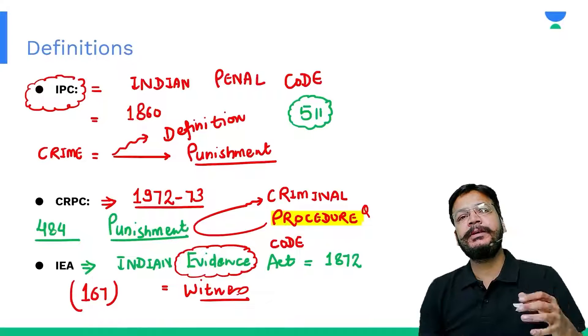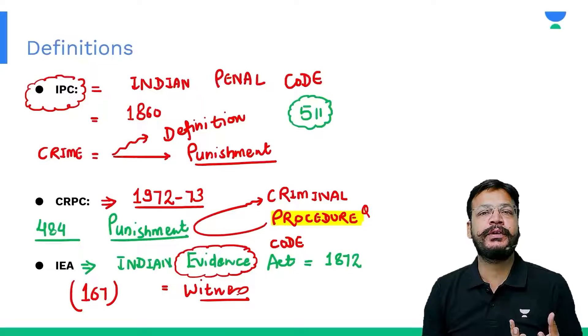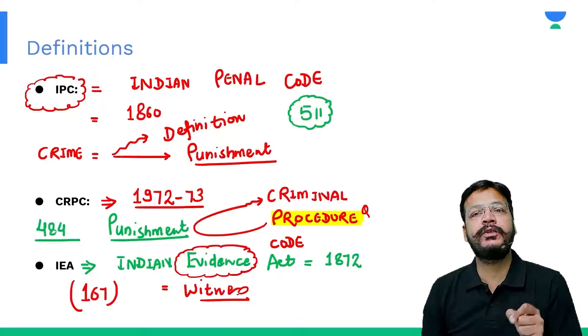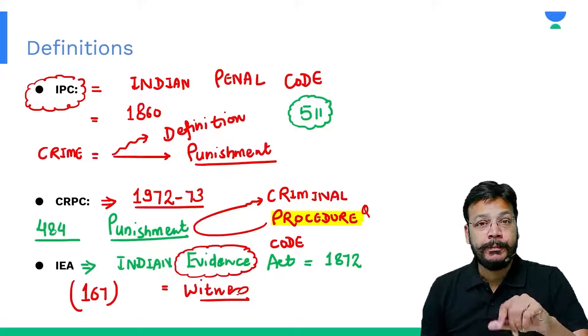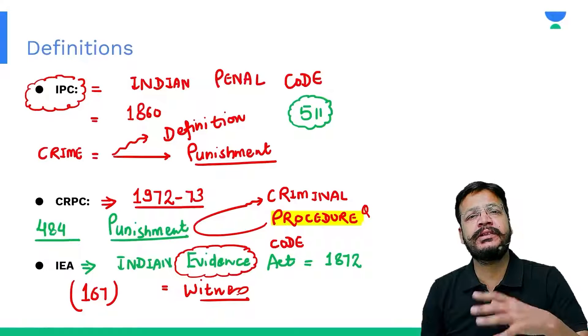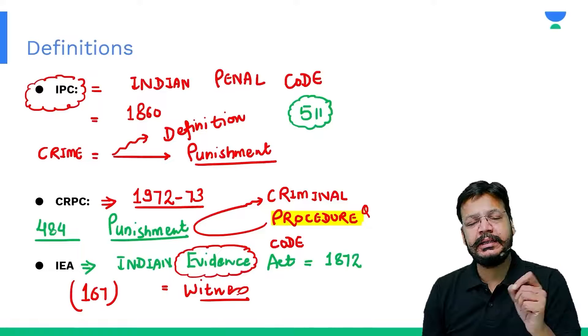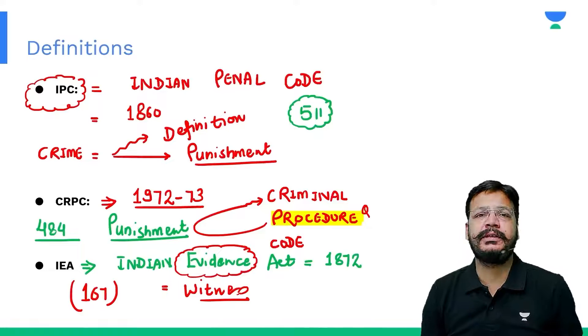So to recap: What is IPC? Definition of crime and punishment of crime — that is IPC. Procedure for punishment — arrest, investigation, summon, bail, warrant — this is CRPC.